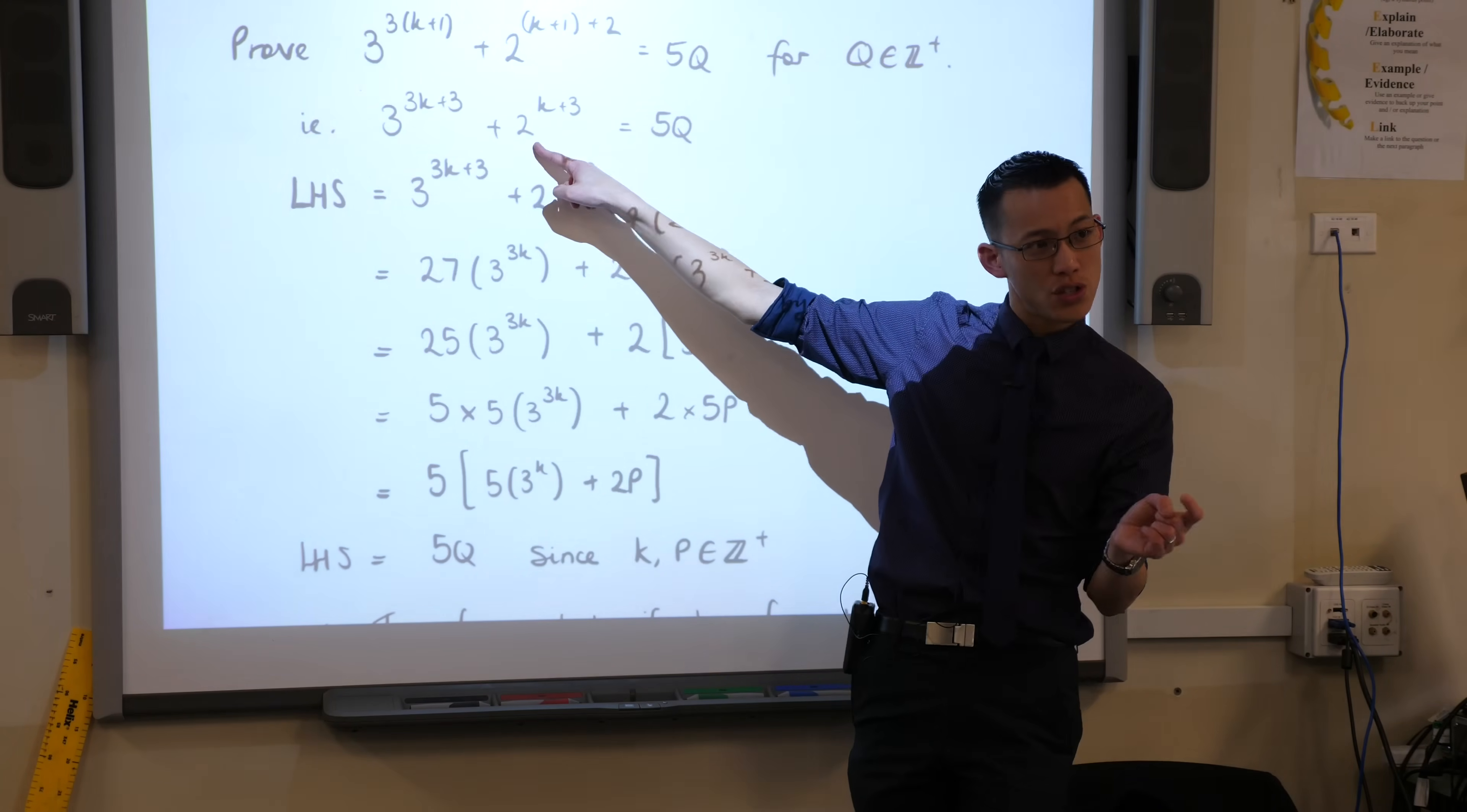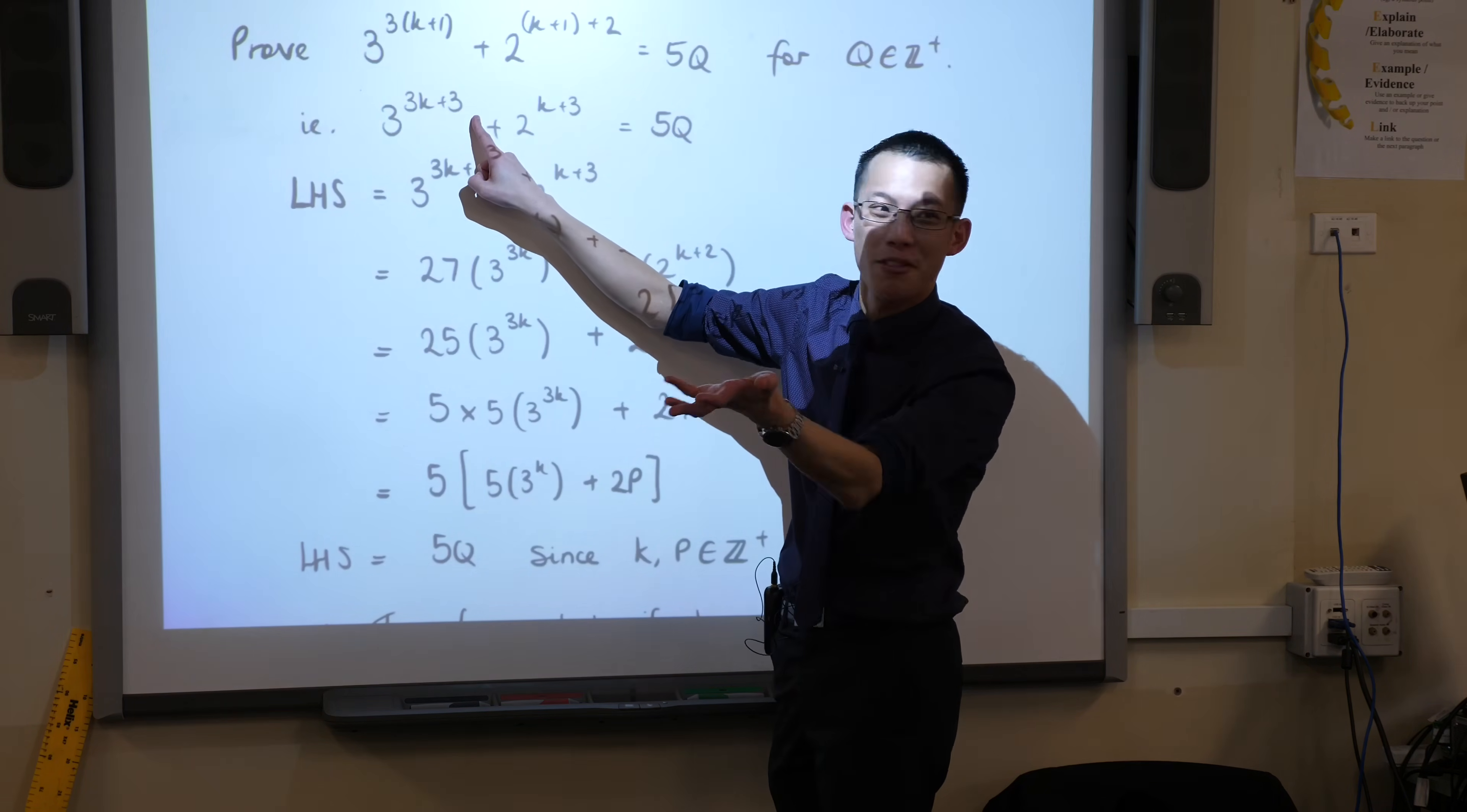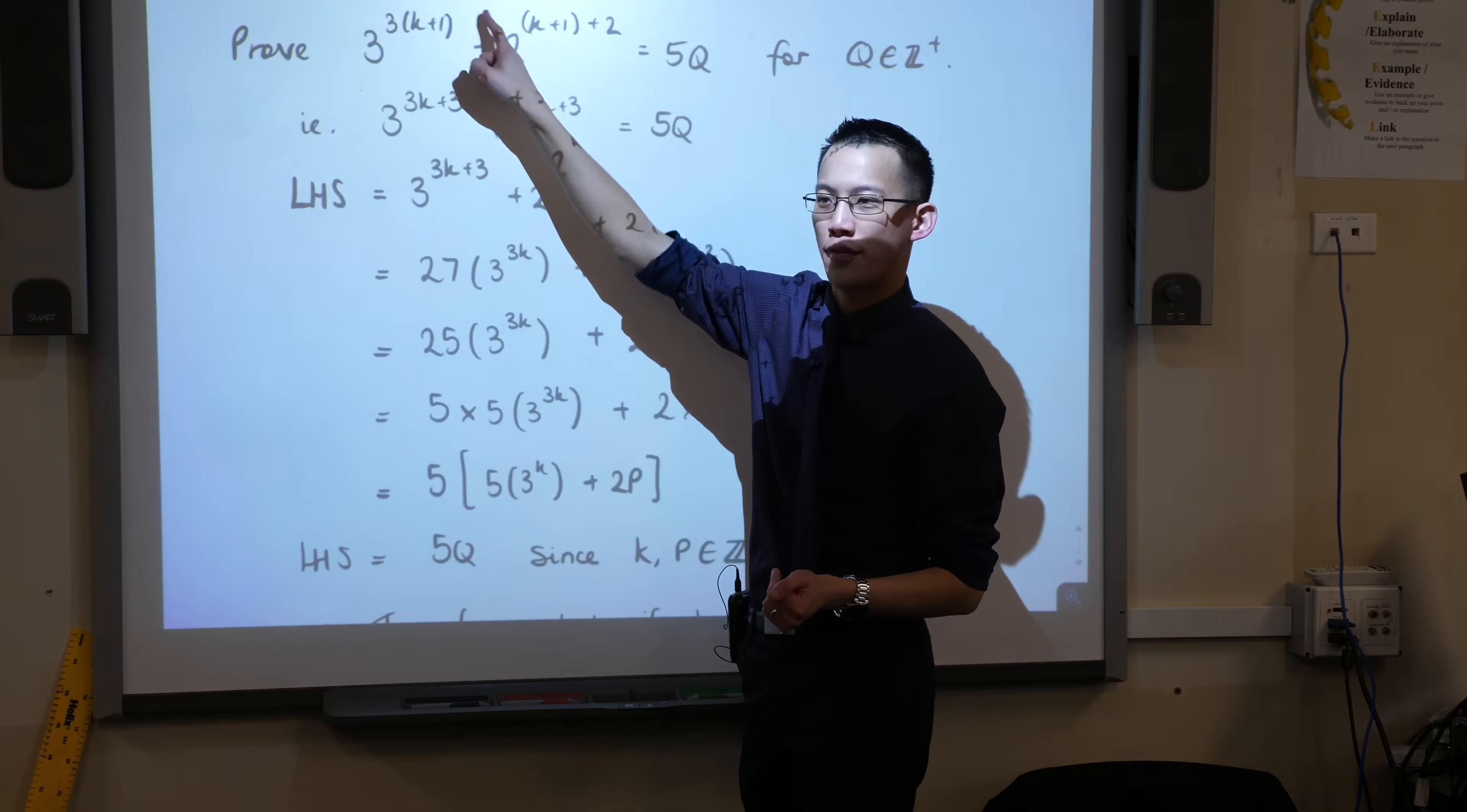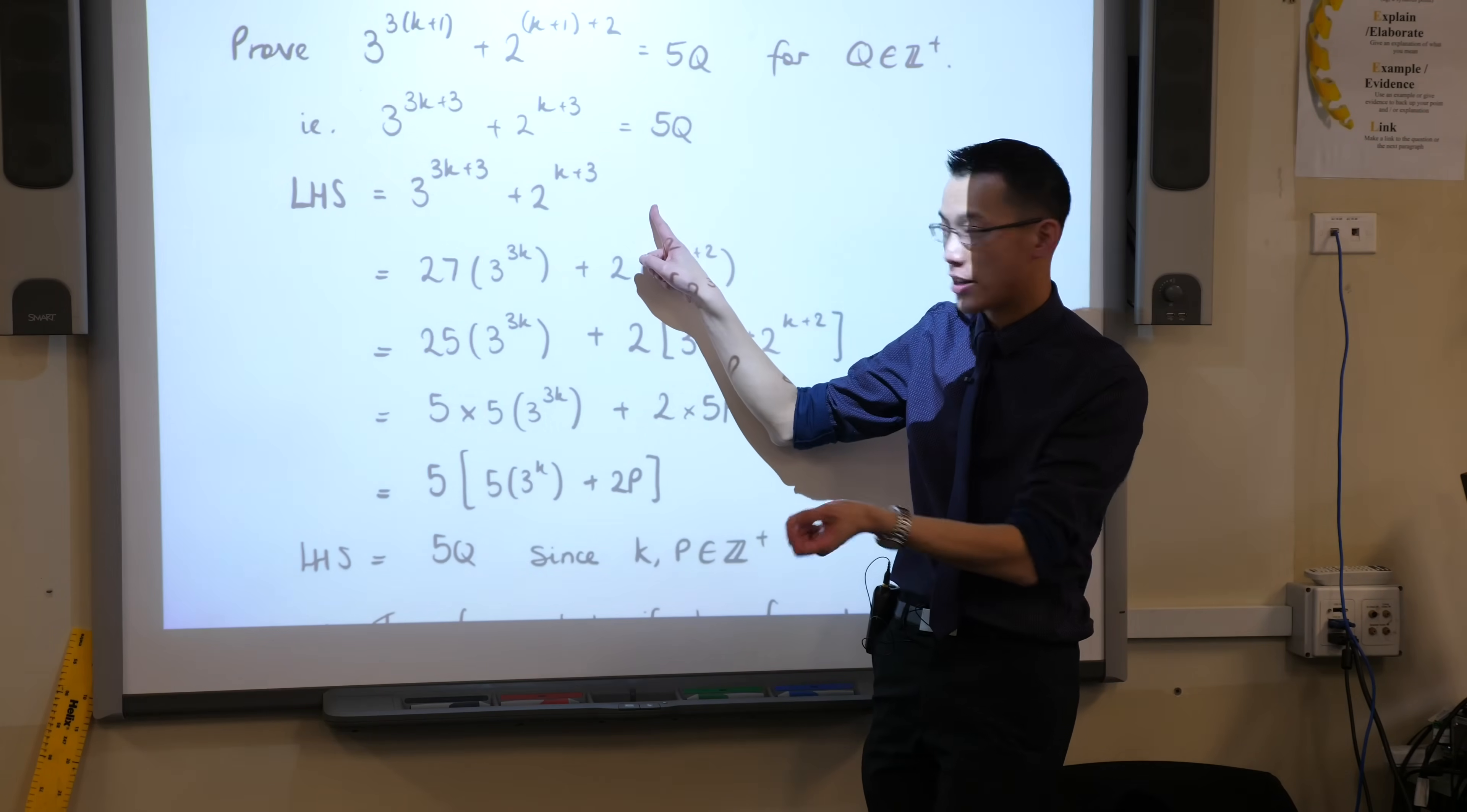A small number of you had issues when you substituted k plus 1 in, and you didn't get 3k plus 3. What do you think is a common error? Yeah, people would say 3k plus 1, because they're like, oh, it's 3, you put in a k there, and you forget that the k plus 1, the whole thing's being multiplied by 3.